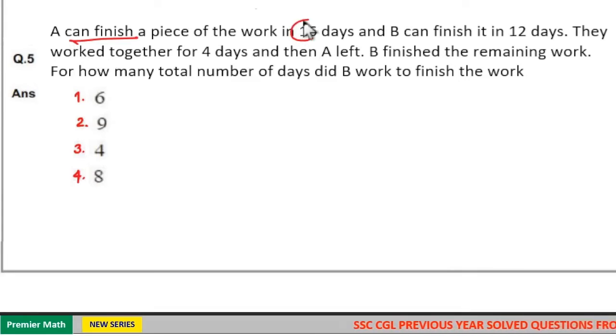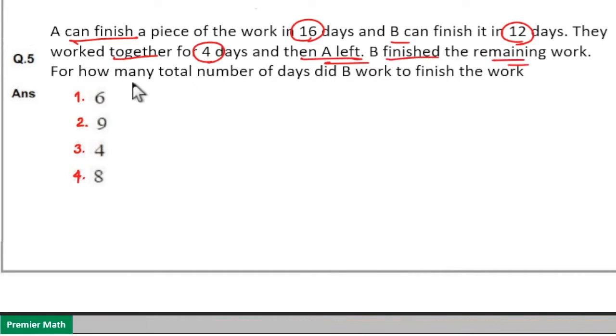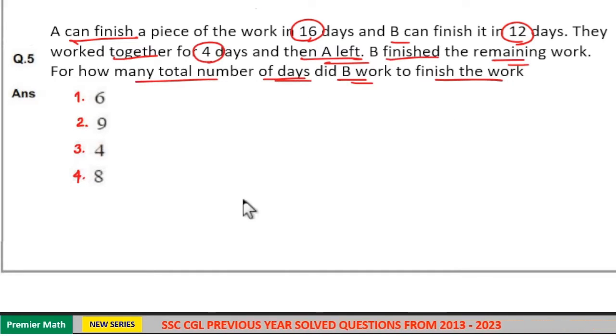A can finish a piece of work in 16 days and B can finish it in 12 days. They worked together for 4 days and then A left. B finished the remaining work. For how many total number of days did B work to finish the work?